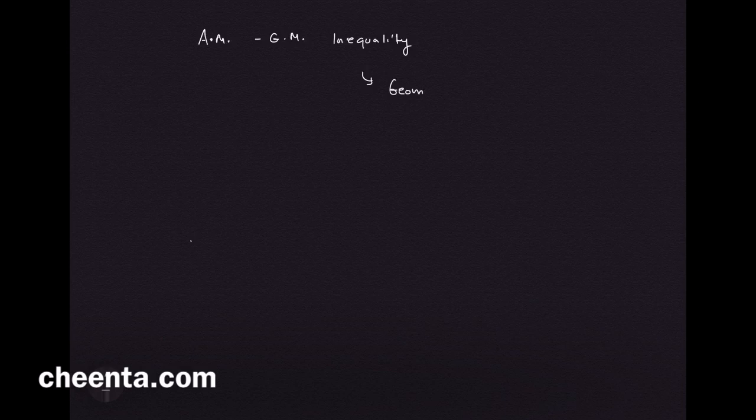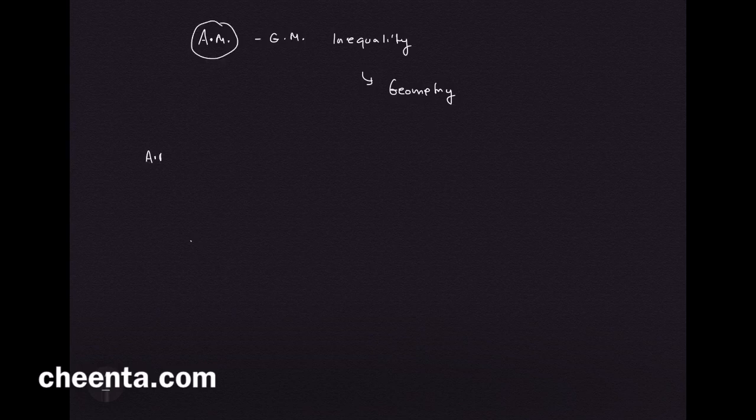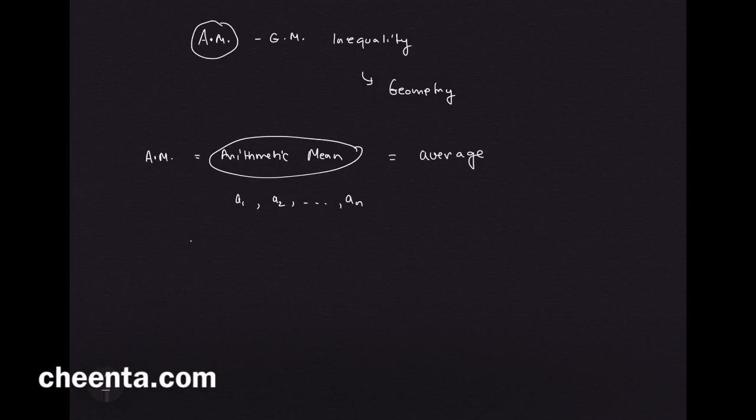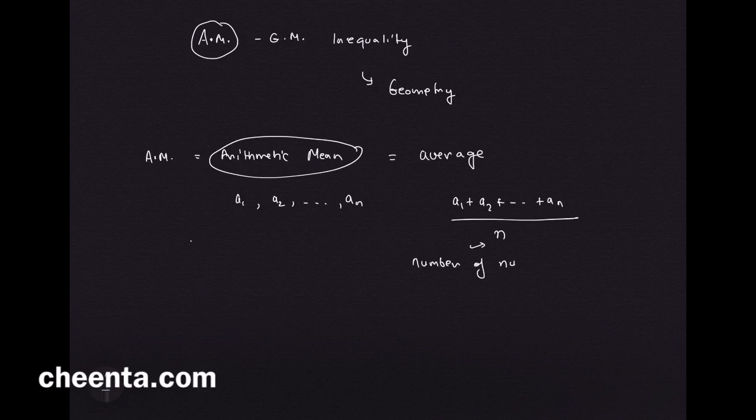Let's talk about the AM-GM inequality and the geometry behind it. First, what is AM or arithmetic mean? It's actually quite simple. If you take a bunch of numbers, let's say a₁, a₂, up to aₙ, then the arithmetic mean is simply the average of these numbers. You take the sum of them, add them up, and divide by the number of numbers.